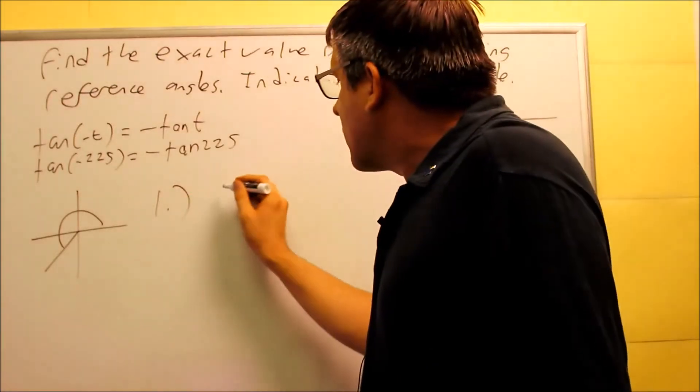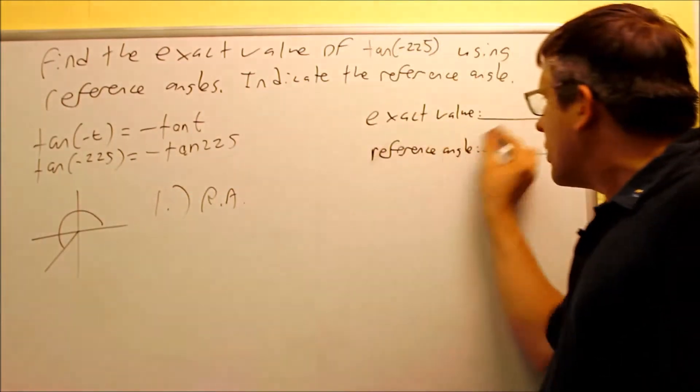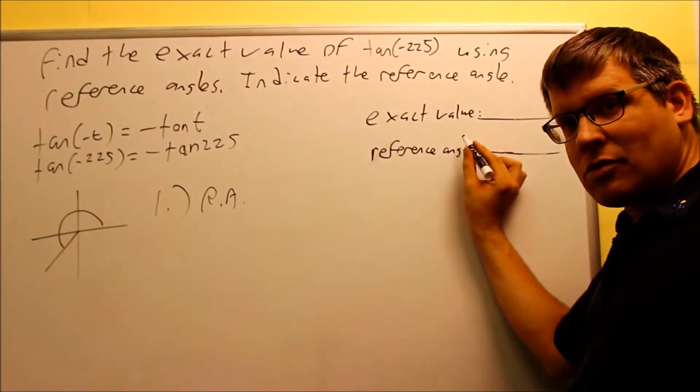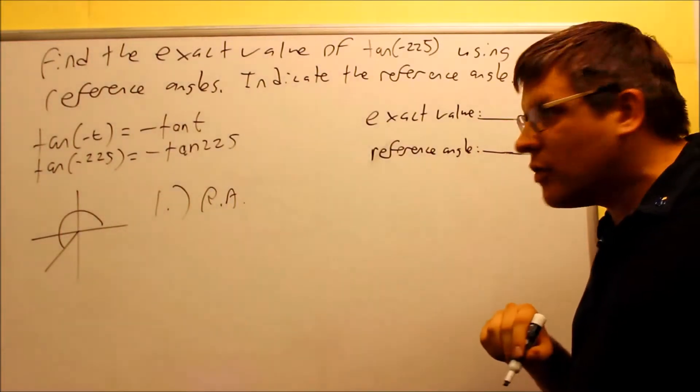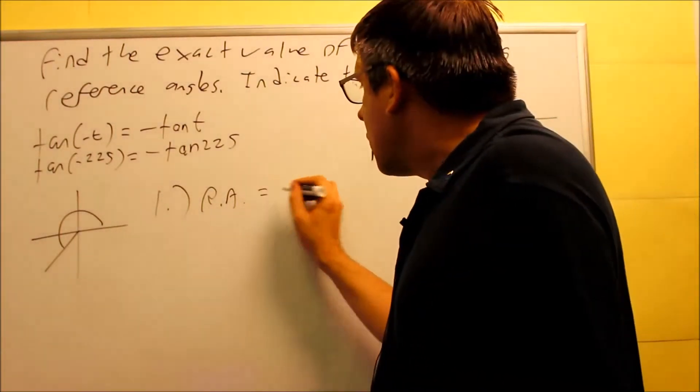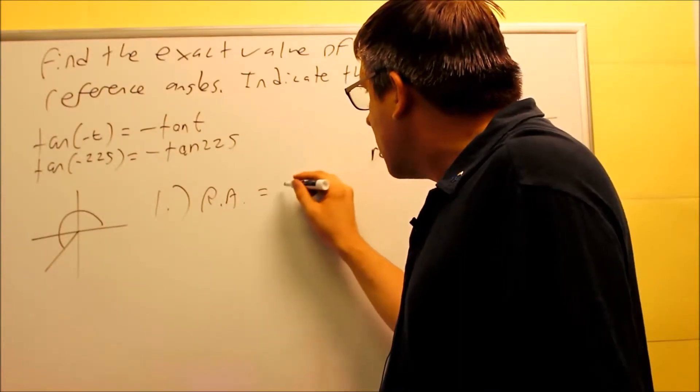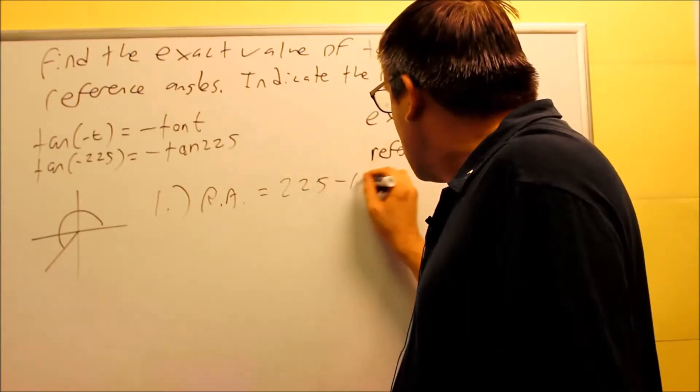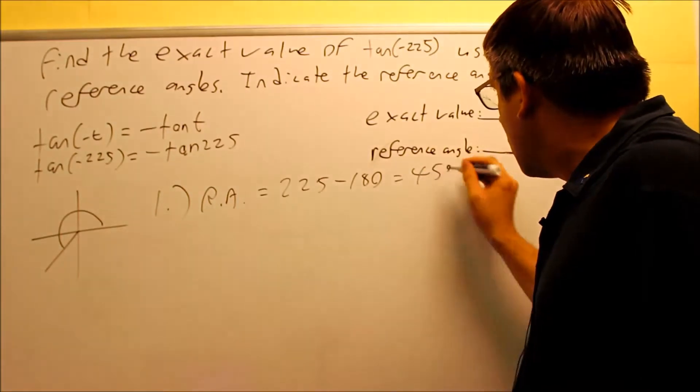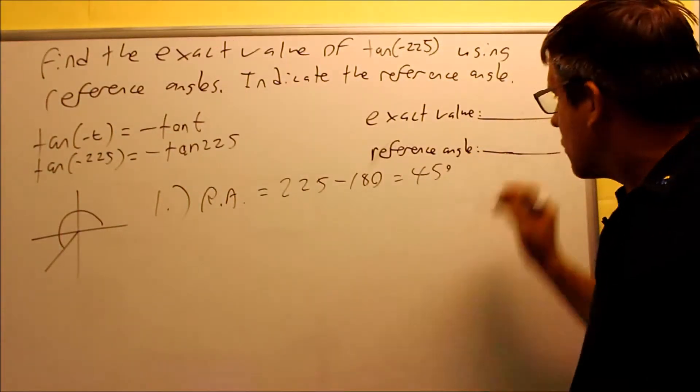My three-step process to find the exact value: the first one says I need to find the reference angle. The reference angle equals theta minus 180. In this case we have 225 minus 180, which gives us 45 degrees. That's my reference angle.